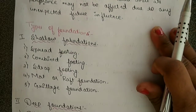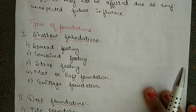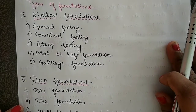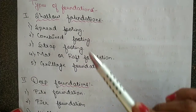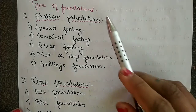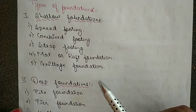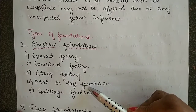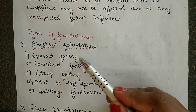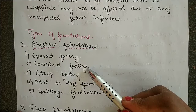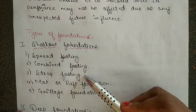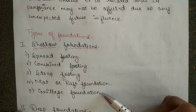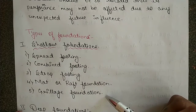After understanding the requirements of foundation, let us move to the types of foundation. There are mainly two categories: the first is shallow foundation and the second is deep foundation. Under shallow foundation there are five types: spread footing, combined footing, strap footing, mat and raft foundation, and grillage foundation.